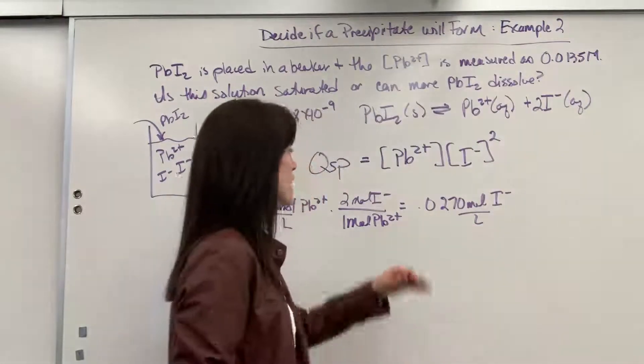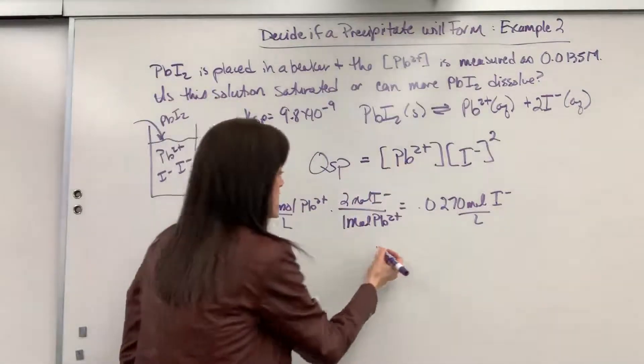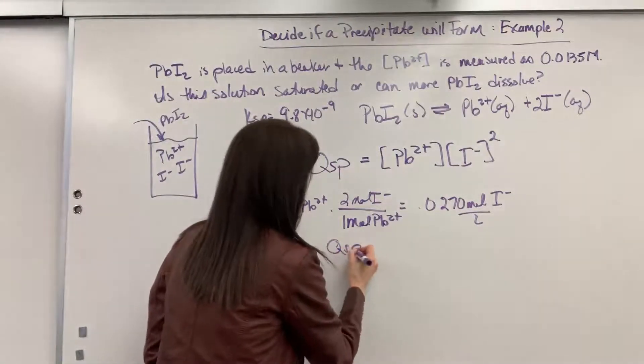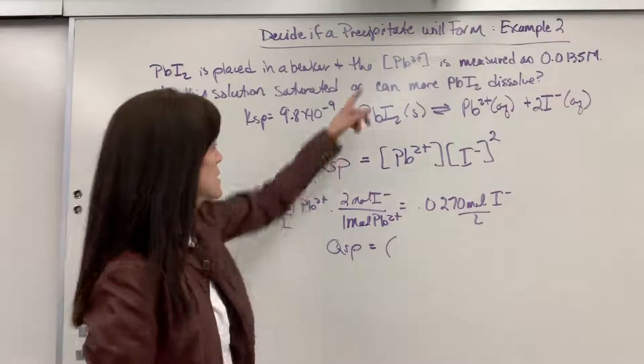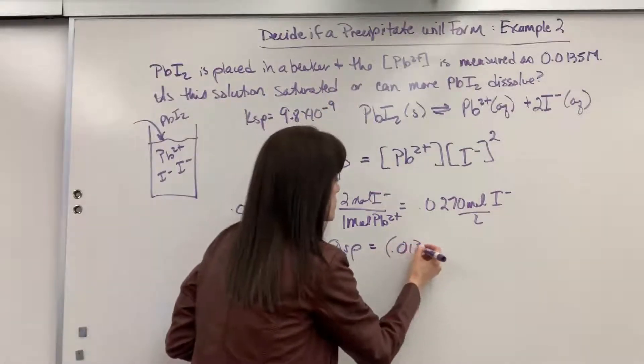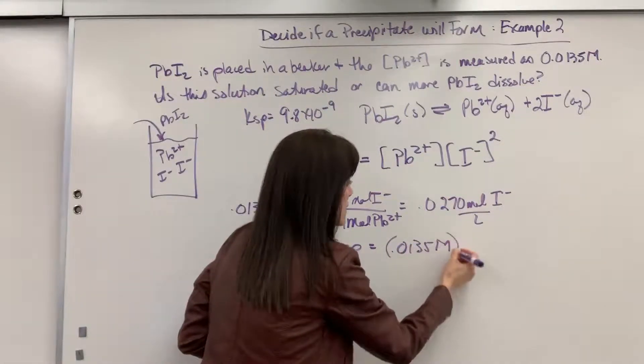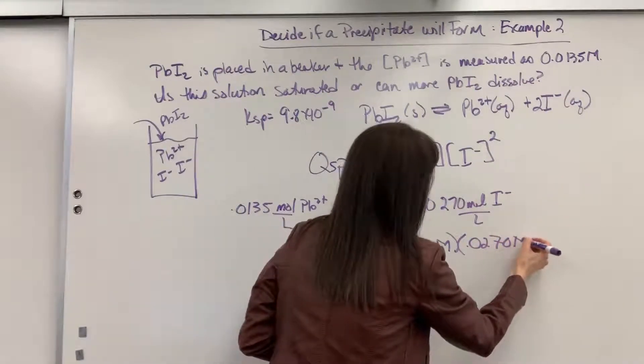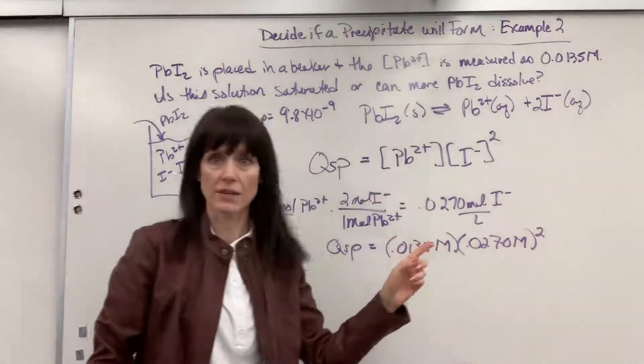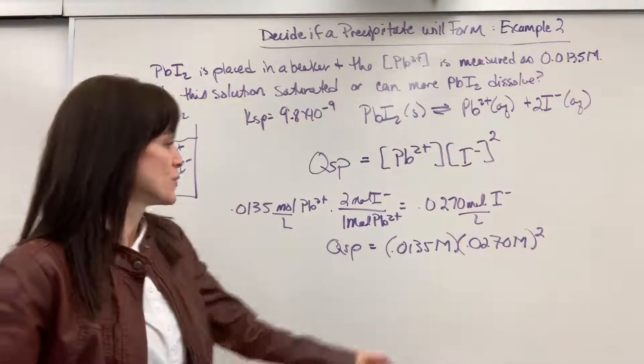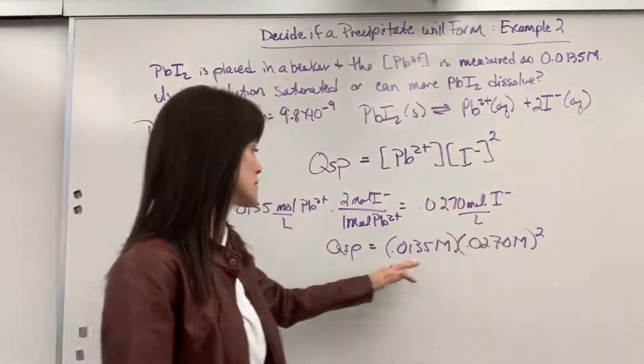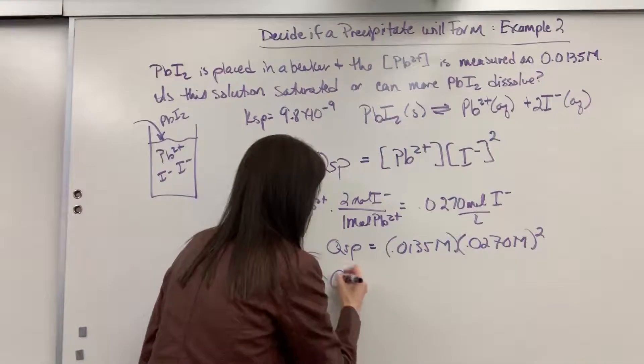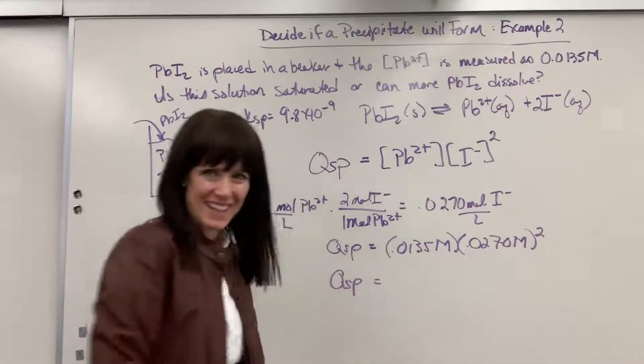Okay, so now I have the concentration of I. Let's go ahead and plug into this. That means that our QSP is going to equal, let's see, the lead was the 0.0135 molar times the 0.0270 molar. And be careful, that's squared. I have to carry that square. So if we do 0.027 squared times 0.0135, QSP, check it out, equals 9.8 times 10 to the minus 9.